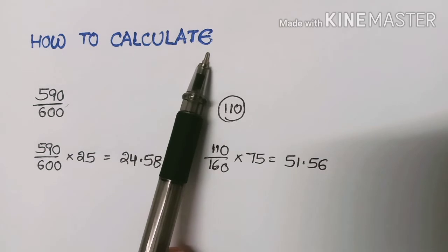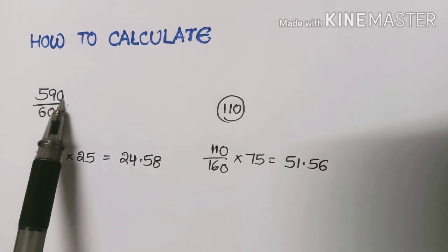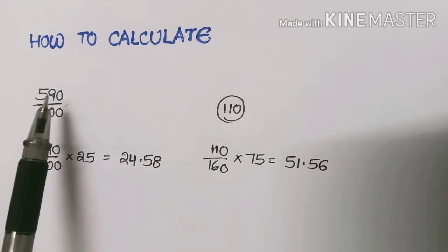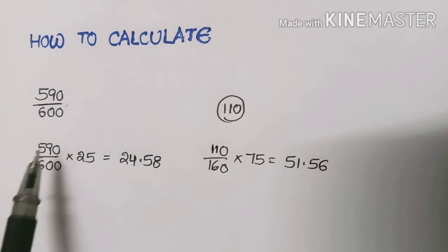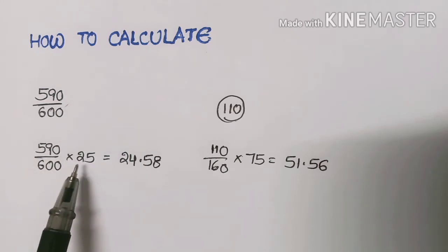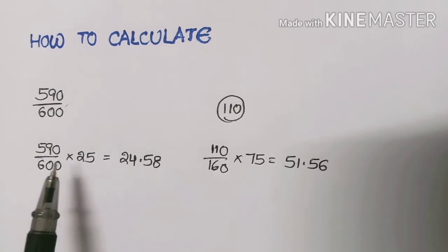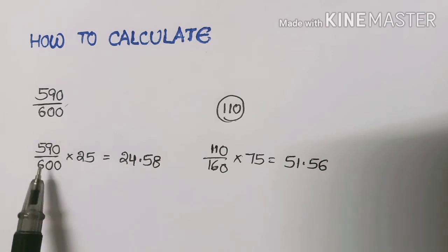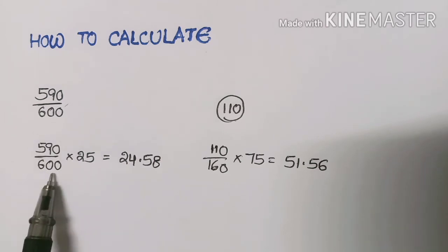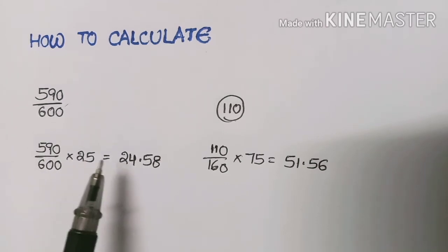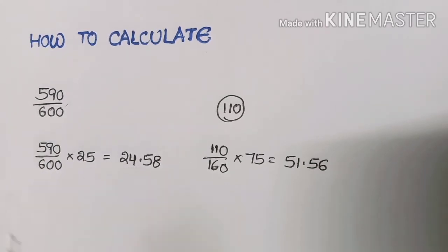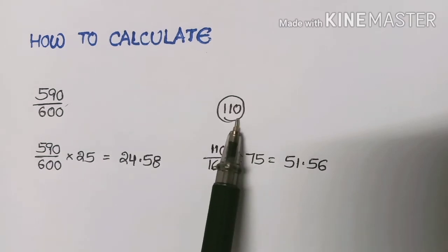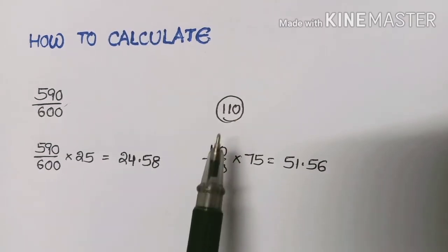Now, how to calculate the MSET score: suppose the student secured 590 marks out of 600 in the intermediate exam. We take 590 divided by 600, multiplied by 25, since 25% weight is given to the intermediate marks. That is 590 by 600 into 25, which equals 24.58.